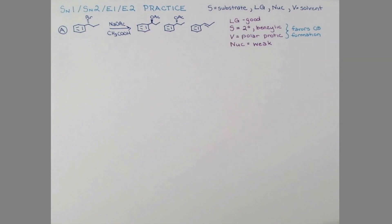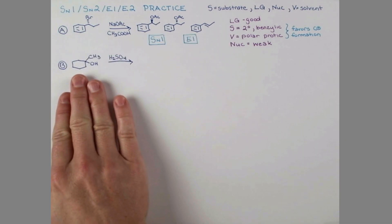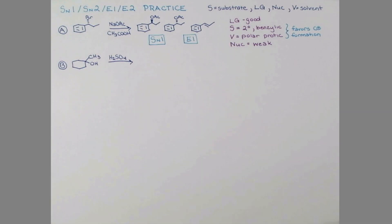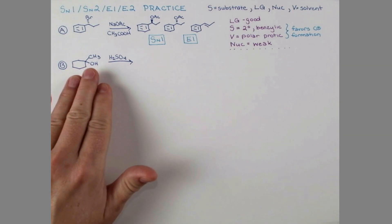We're forming a carbocation at the secondary center which is a little bit hindered. Once we form that carbocation, it's really easy for acetate to come in and grab the little proton right nearby, so we're actually going to expect some elimination product in this reaction as well. The alkene will be favored. Let's tackle another problem. For the second problem, we're treating this alcohol with sulfuric acid. I encourage you to pause the video, think about these factors, and see if you can come up with the answer on your own.